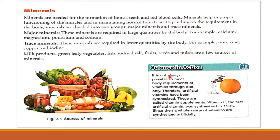It is not always possible to meet the body's requirement of vitamins through diet alone. Therefore, artificial vitamins have been synthesized — these are called vitamin supplements. Vitamin C was the first artificial vitamin, synthesized in 1935. Since then, a whole range of vitamins have been synthesized artificially.